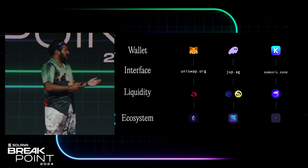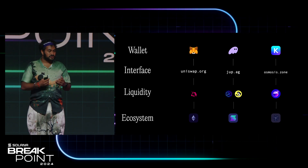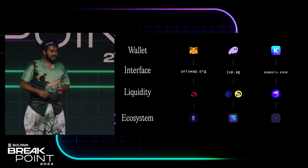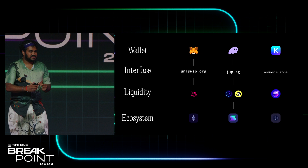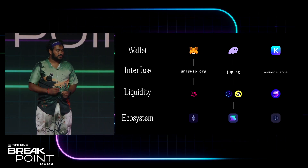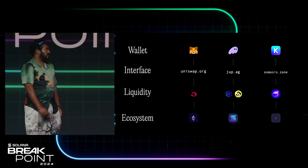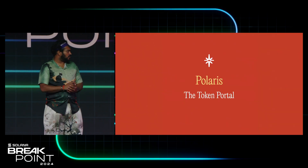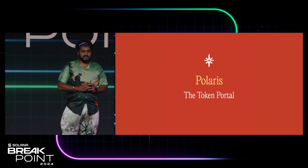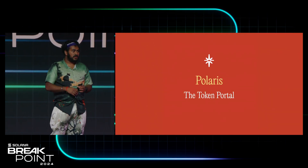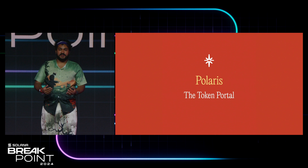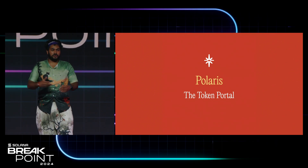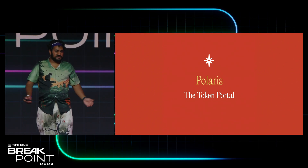So we were looking at how do we solve this problem. Users have wallets that they like to use, and liquidity is very sticky in the chains it's built on. We realized the best place to tackle this is at the interface layer. This is why we built Polaris, the token portal. Just like a web portal, it's a single interface that allows you to tap into liquidity across all these different venues and chains.